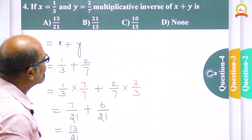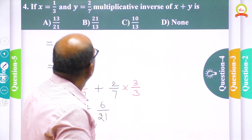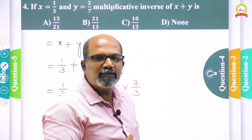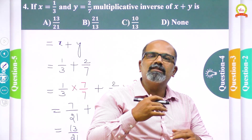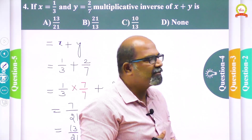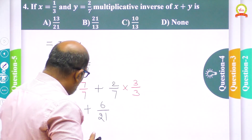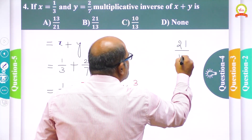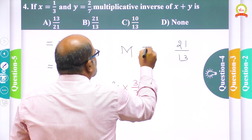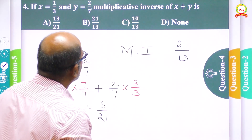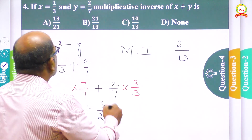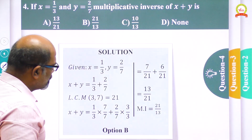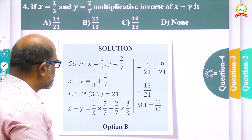But the answer does not end there, because the question asks for the multiplicative inverse of x plus y, not just x plus y. The multiplicative inverse is the reciprocal of the given number. The number we got is 13/21, so the reciprocal is 21/13. So 21/13 is the multiplicative inverse. Option B matches our answer — let us check. Yes, it is correct, option B is the correct one.